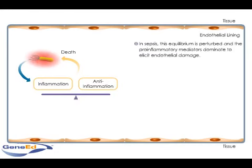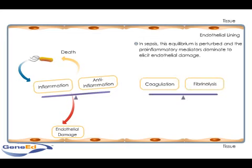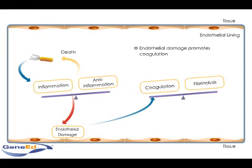In sepsis, this equilibrium is perturbed, and the pro-inflammatory mediators dominate to elicit endothelial damage. Studies of the extent of coagulation and fibrinolysis abnormalities in sepsis have shown that endothelial damage promotes coagulation. Normally, modulators promote fibrinolysis to counteract the thrombosis. In sepsis, however, the endothelial damage is proposed to suppress fibrinolysis, further contributing to the loss of control.